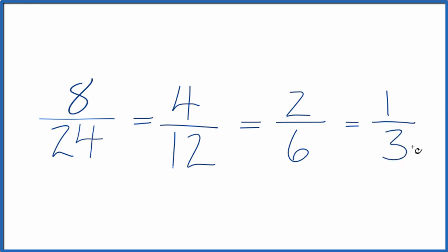So all of these are equivalent fractions for 8 24ths. If you divide 8 by 24, 4 by 12, 2 by 6, or 1 by 3, you'll get the same decimal answer. They're equivalent fractions.